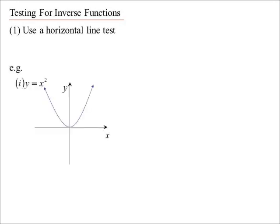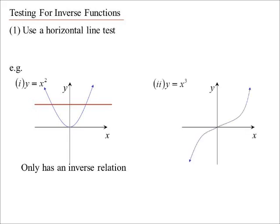Take our basic parabola, y equals x squared. Drawing a horizontal line, we can see it cuts it twice, so y equals x squared does not have an inverse function — it would only have an inverse relation. Whereas with the cubic, no matter where you draw the horizontal line, it will only cut it once. So yes, the cubic would have an inverse function.